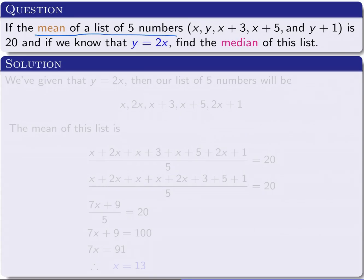numbers—these five numbers are x, y, x+3, x+5, and y+1—and the mean of these five numbers is 20, and if we know that y equals 2x, then we need to find the median of this list. So we're given that y equals 2x in the question.